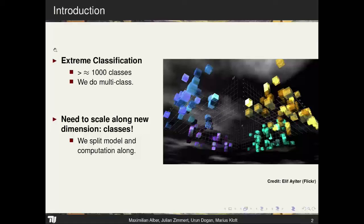The model weight vector is typically the number of features times the number of classes, and with current datasets this is reaching a level where we cannot fit it into memory on a single machine. So we have to split both the computation and the model.